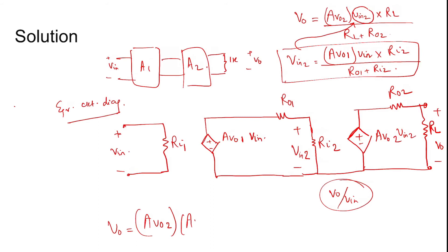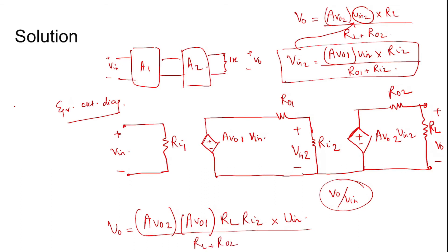Plugging everything in, Vout = Av02 × Av01 × RL × Ri2 × Vin / [(RL + Ro2) × (Ro1 + Ri2)]. Therefore, Vout/Vin = Av02 × Av01 × RL × Ri2 / [(RL + Ro2) × (Ro1 + Ri2)].